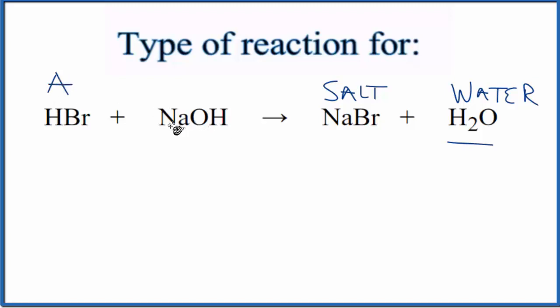And then NaOH, we have a metal bonded to an OH. This is a hydroxide. So if a metal and a hydroxide, that's going to be a base. Acid plus base gives us salt and water. That's the pattern for a neutralization reaction.